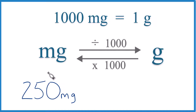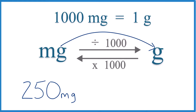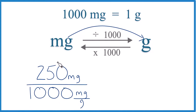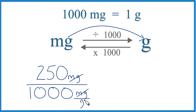Since we have 250 milligrams and we're going to grams, we're going to divide by 1,000. So really all we're doing is dividing 250 by 1,000 — that'll get our milligrams to grams. But if you look at the units, we started out with our 250 milligrams, and then we're dividing by 1,000 milligrams per gram. That's our conversion factor. This way, milligrams cancels out. We're left with grams, and that's what we're looking for.